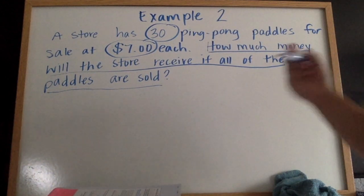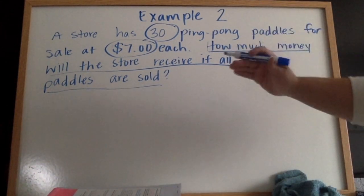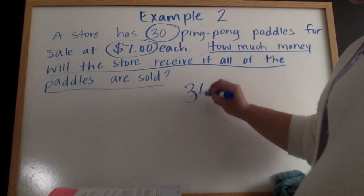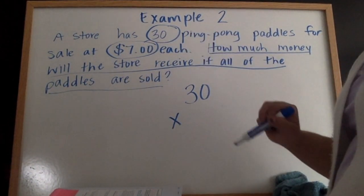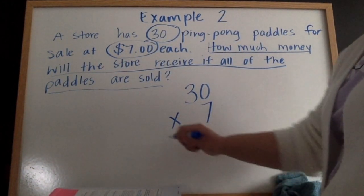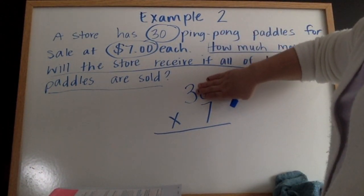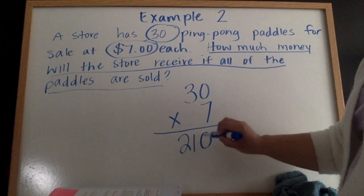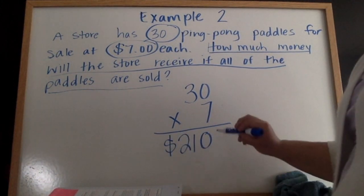If you buy one ping pong paddle, that's $7. Two ping pong paddles is $14, and so on. We're just going to keep adding 7 over and over. An easier way to do it is just to multiply. So, 30 ping pong paddles times $7 each. I'm just going to write $7 as a 7 because there are no cents to it. This makes the problem a lot easier. Remember to cover up that zero, and then we just have 3 times 7. 3 times 7 is 21. Add that zero back in your product. We do need a label and it asks us how much money the store will receive. So, $210 is your answer.